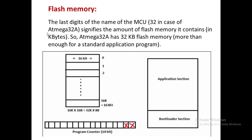Flash memory, as mentioned, is used for storing programs. The last digits of the name — for example ATmega32 — the number 32 stands for 32 KB of flash memory. This flash memory is classified into two sections: one is the application section where the user can use it, and the other is the bootloader section used for the booting purpose of the microcontroller.